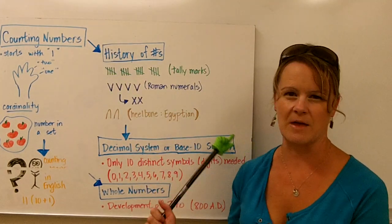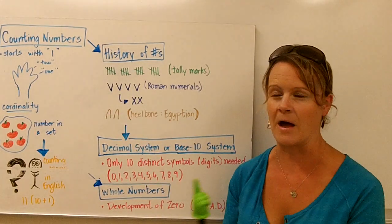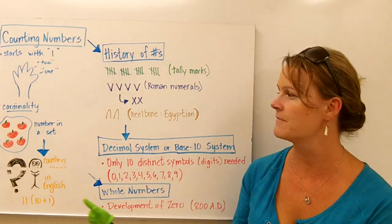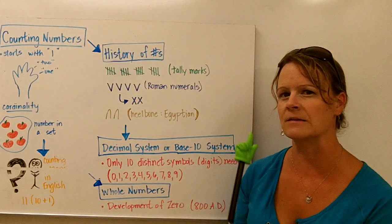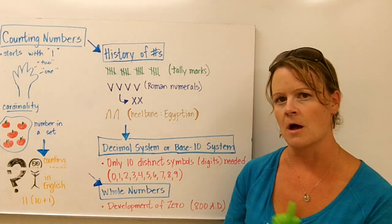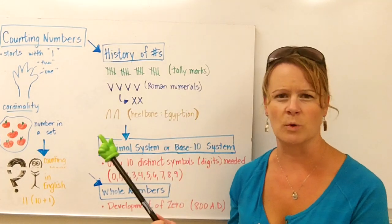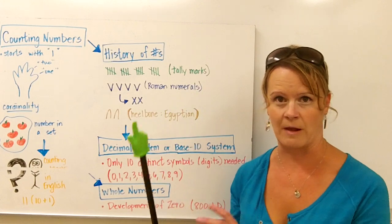Roman numerals tried to make that a little more simplified by creating a symbol to represent a certain amount. So here this V symbol represents five. And it did simplify things. They actually created other Roman numerals like X, L, and M to represent other numbers. But it was still fairly cumbersome. Think about the number one hundred thousand and writing that in Roman numerals. It's still quite cumbersome and long.